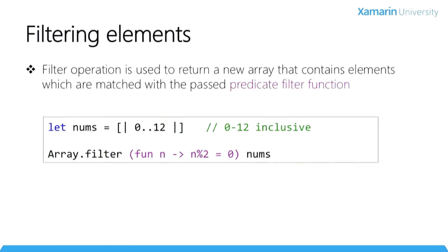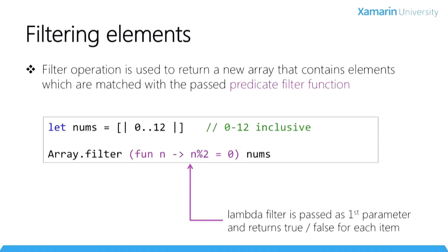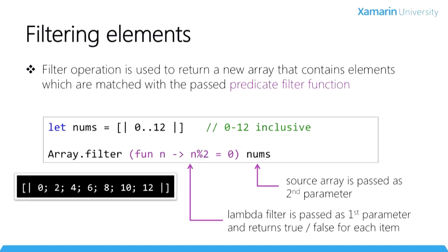Filtering data is performed using the Array.filter function. This takes a predicate function which takes an item from the array and returns a boolean result indicating whether it matches the filter — the equivalent of a LINQ Where function. You can either pass a function tied to a value or an anonymous function, as you can see here. In this code, we're checking to see if the value passed is evenly divisible by two. Remember that a single equal sign in F-Sharp indicates equality, not assignment. The result would be just the even numbers between 0 and 12.